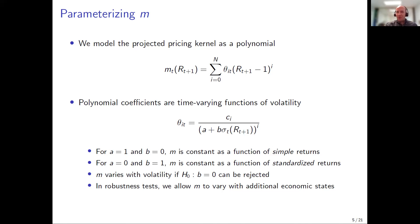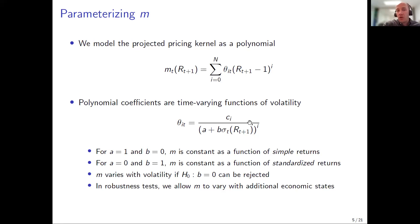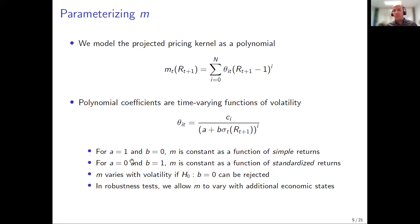We pause for questions. One question asks: do you impose that b is greater than zero? We do not impose it. I'll now show estimation results for three cases: the unrestricted case, where b will turn out to be positive; and the two restricted cases where the pricing kernel is time-invariant either as a function of simple returns or standardized returns. We see what fits the data best.